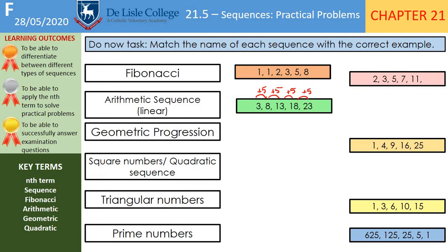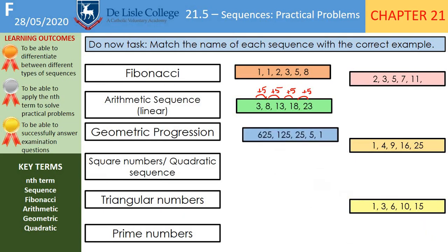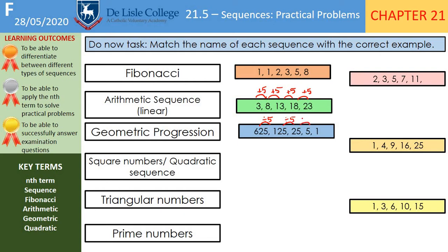Then geometric progression — hopefully you remember that is multiplying or dividing by a constant value. We can see here that we're dividing by 5 each time, and that happens from term to term. So that makes it a geometric progression.